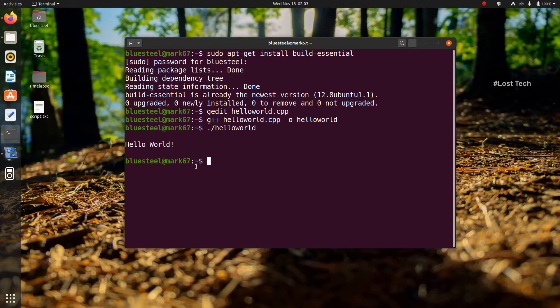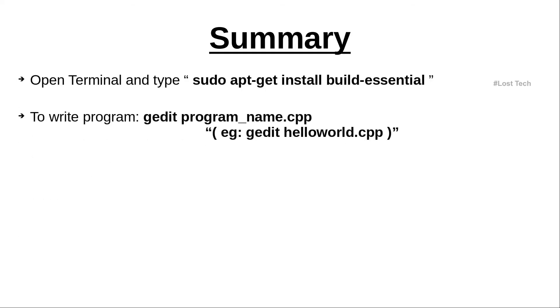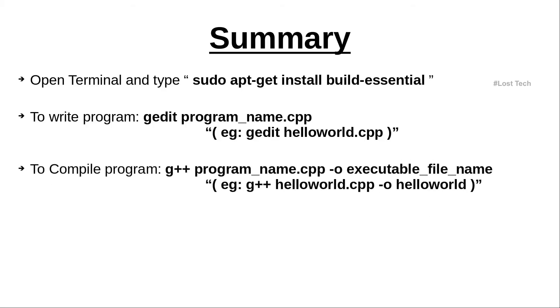That's all! Congratulations. Here is a quick summary: to install the GNU compiler, open the terminal and type sudo apt-get install build-essential. To write a program, type gedit followed by the program name dot cpp — for example, gedit hello_world.cpp.